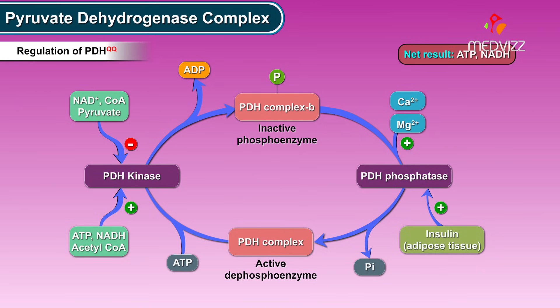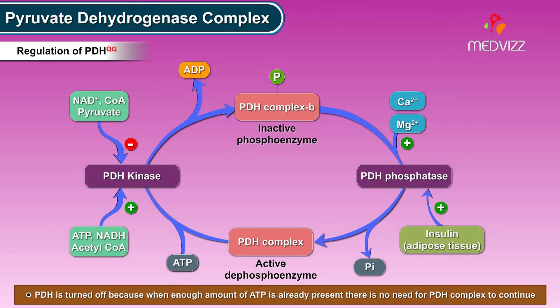The net result is that in the presence of high-energy molecules like ATP and NADH, the pyruvate dehydrogenase complex is turned off, because when sufficient energy is already present there is no need for the PDH complex to continue.